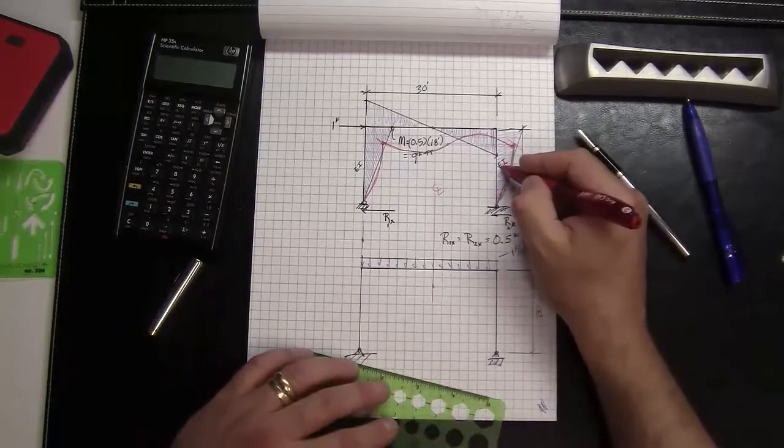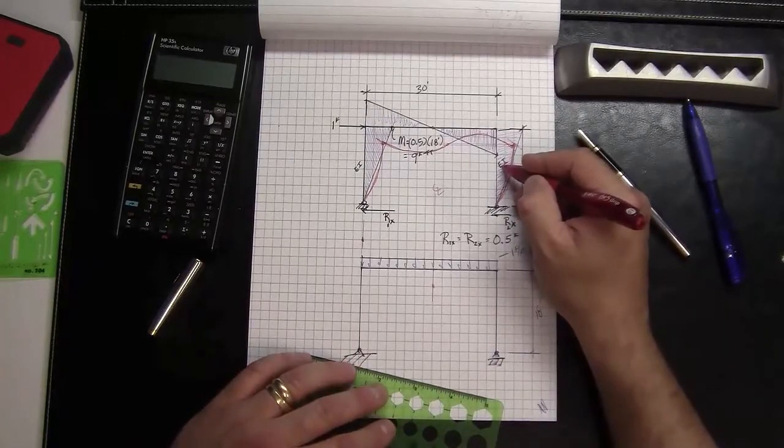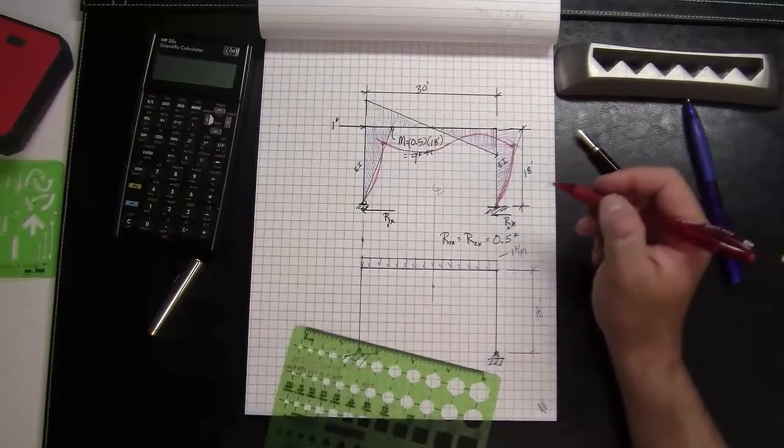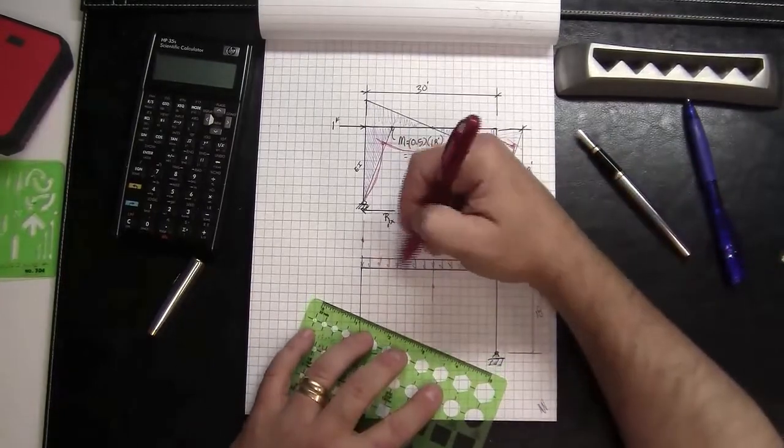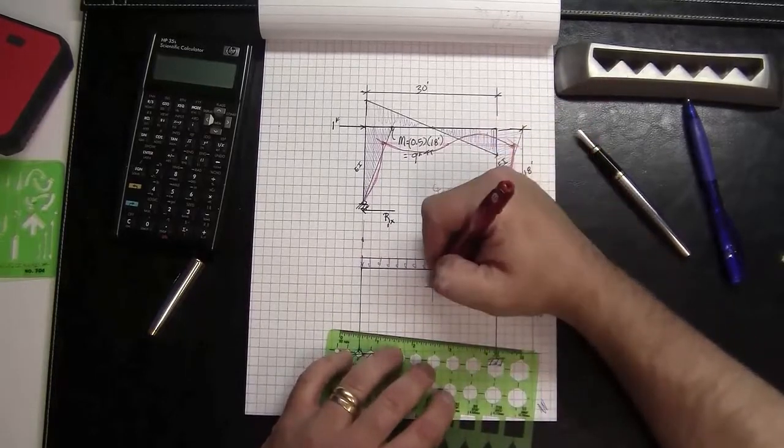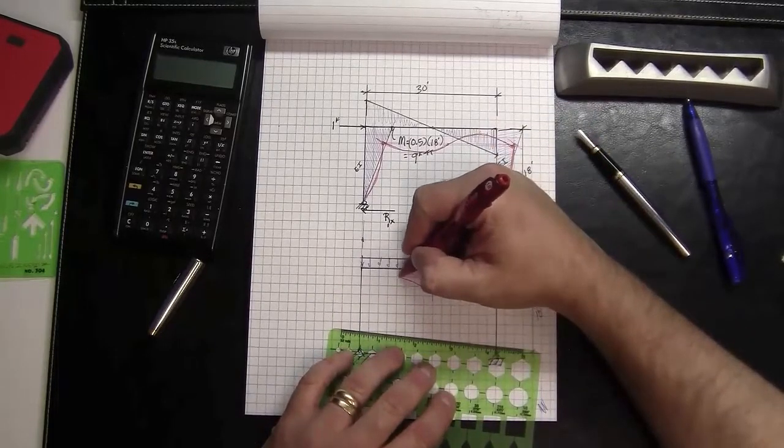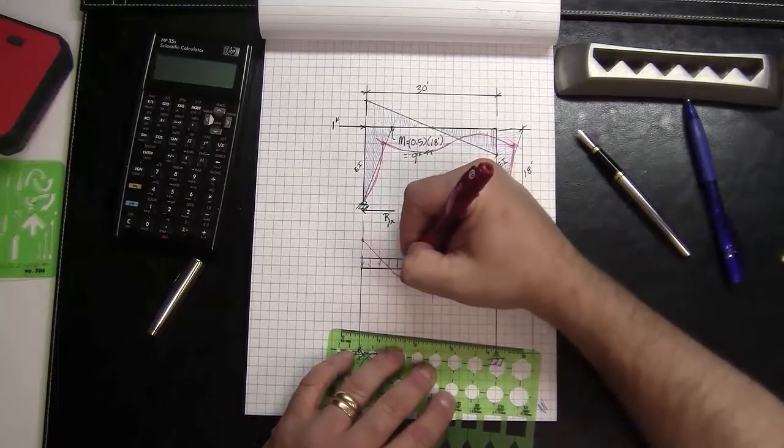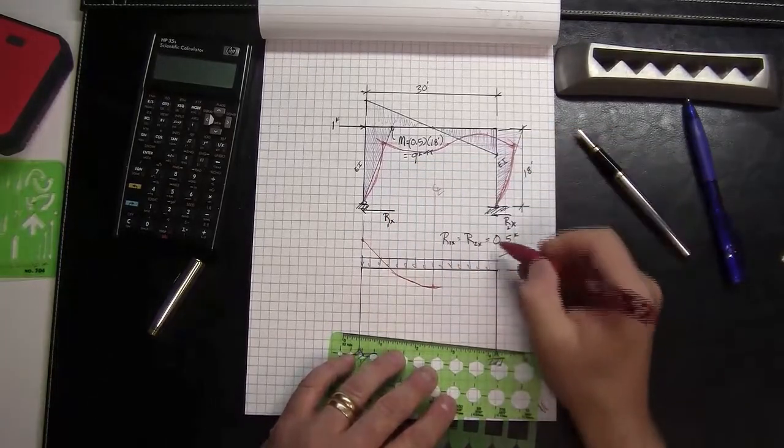Remember, we assumed same material modulus of elasticity, same moment of inertia. And I know that then in the middle there, my moment diagram will look something like this.